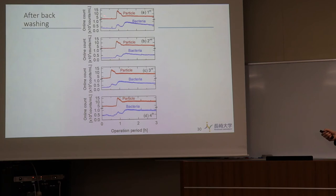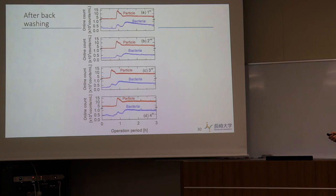Looking in detail at the period after backwashing: for particles there is one peak, but for bacteria there are two peaks — two increases. This pattern of two peaks follows all backwashing events, which is a good indicator that the bacteria counter is more sensitive to variation than the particle counter alone.